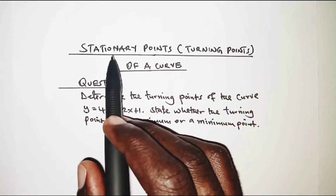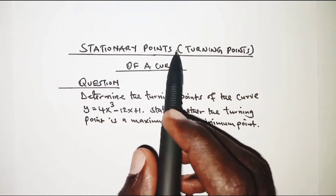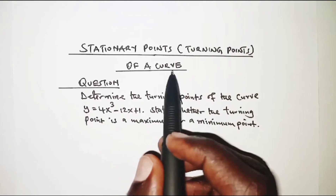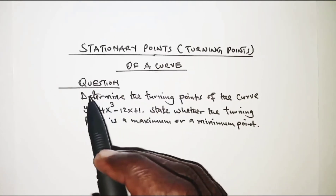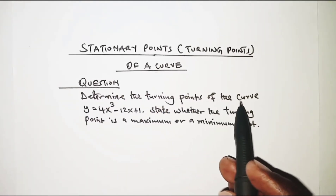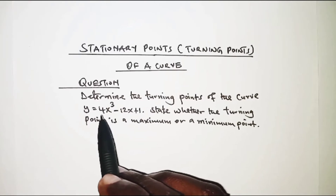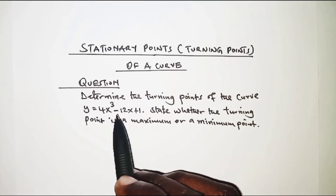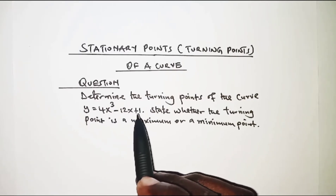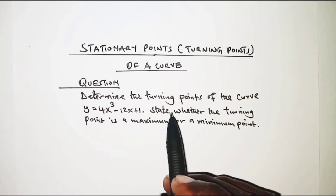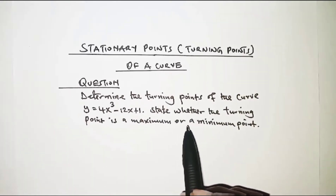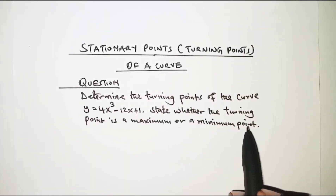Today we are looking at stationary points, also known as turning points of a curve. The question reads: determine the turning points of the curve y = 4x³ - 12x + 1, and hence state whether the turning point is a maximum or a minimum point.